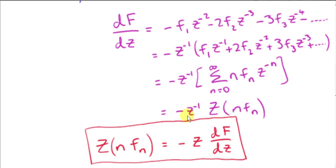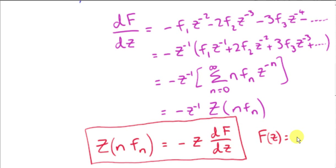Multiplying both sides by minus z, we get the property: the Z-transform of n times f sub n equals minus z times the derivative of big F of z with respect to z, where big F of z is the Z-transform of little f sub n.